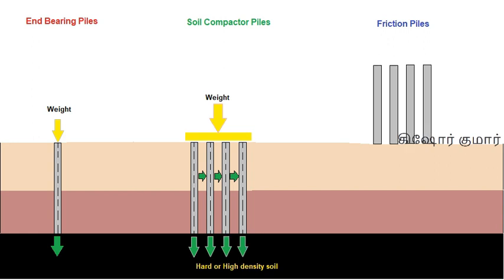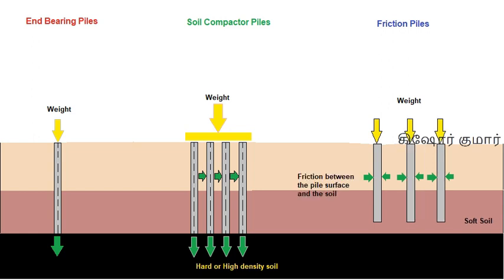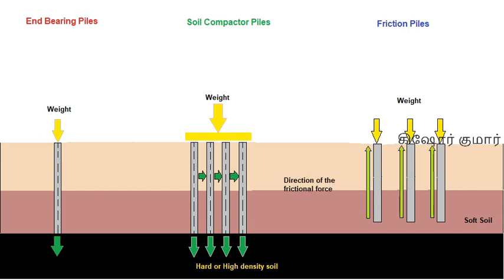The columns in this sort of piling method are driven till the soft or medium soil. The friction between the column surface and the soil holds the column tight.